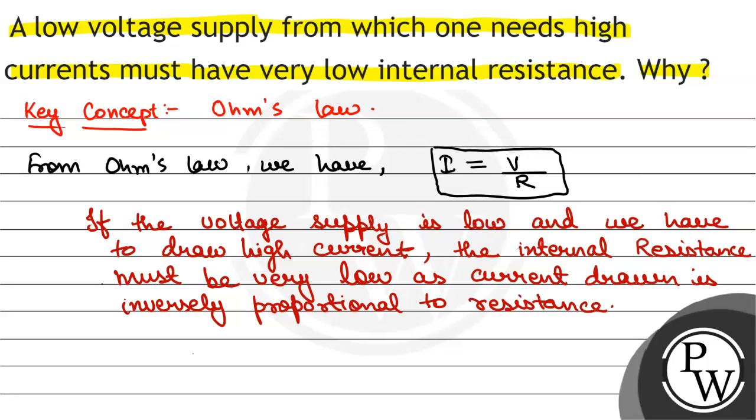So, current inversely proportional to resistance. So, if we have to take high current, then we have to make the resistance very low.